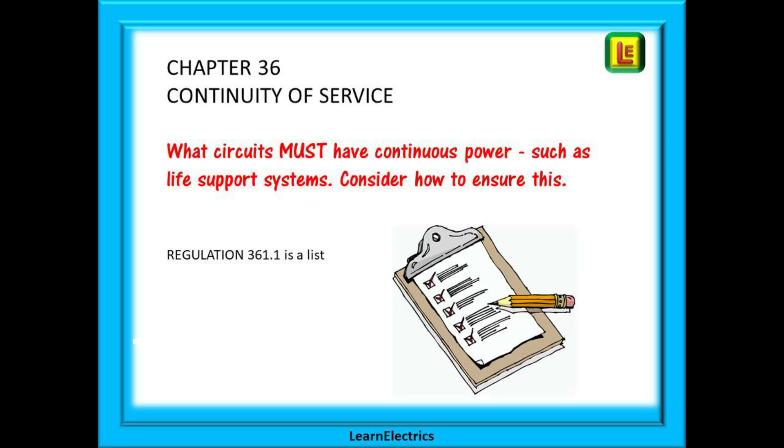And lastly, is Chapter 36. Continuity of service. What circuits must have continuous power, such as life support systems. It could be an oxygen supply in a hospital. It could be heat lamps for animal breeding. It could be ventilation systems for chicken breeding. Or pumping systems for sewage. Lots of applications have a requirement for continuity of service. So consider how to ensure this.